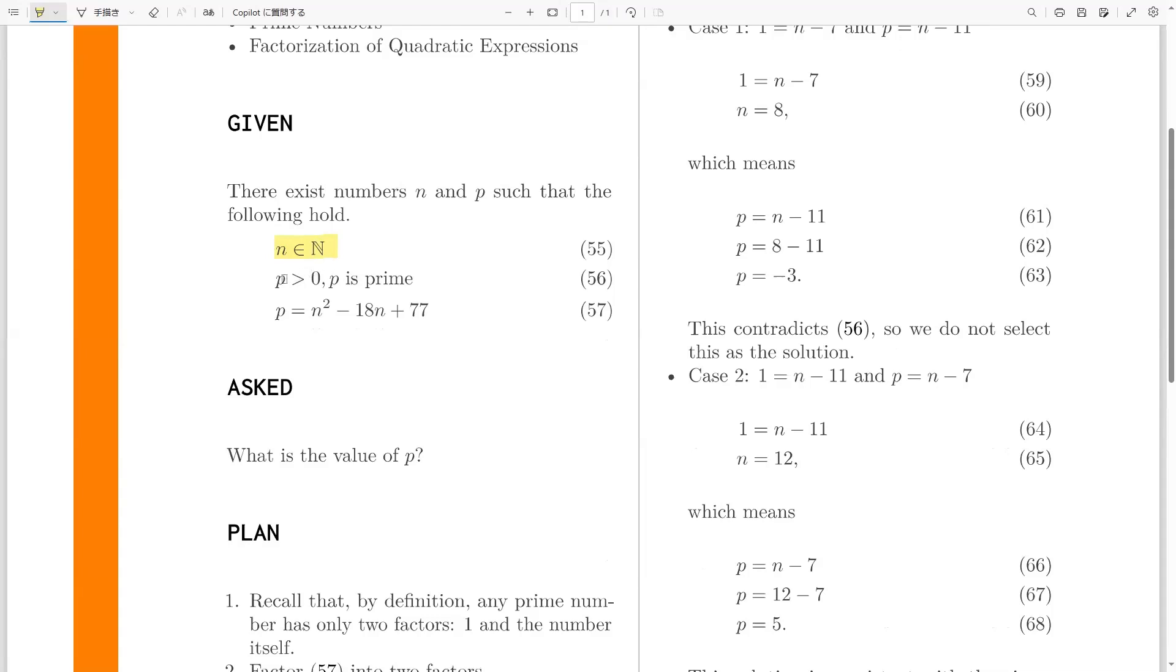Then we are also told that p is greater than 0 and that p is prime, so that means p is also a positive integer, but at the same time, it's also prime. Prime numbers are those that are not factorable. That means their only factors are 1 and itself. So in this case, the factors of p would be 1 and p. Those are the only two factors of p because it's prime.